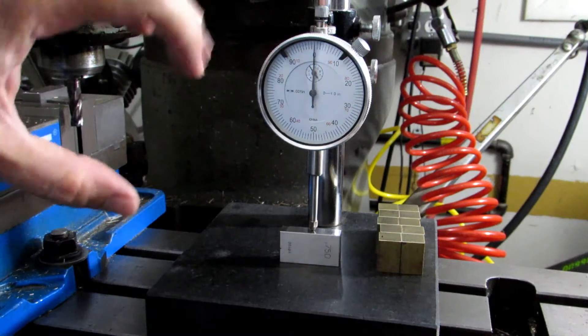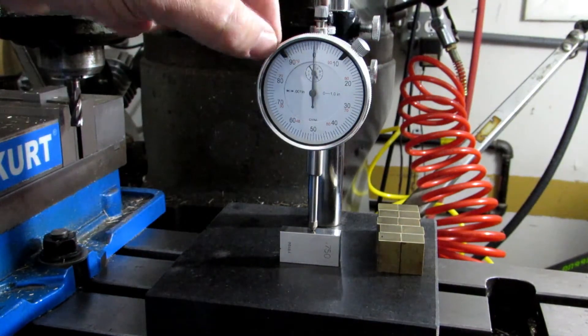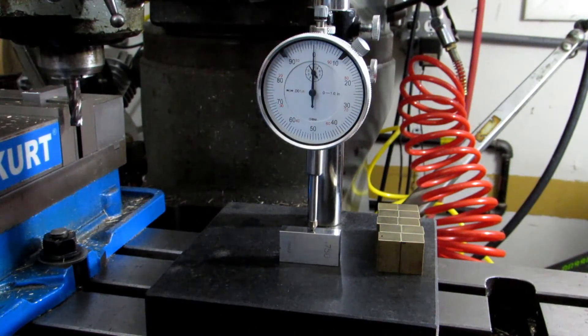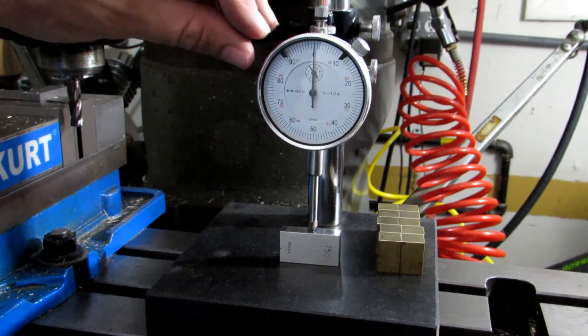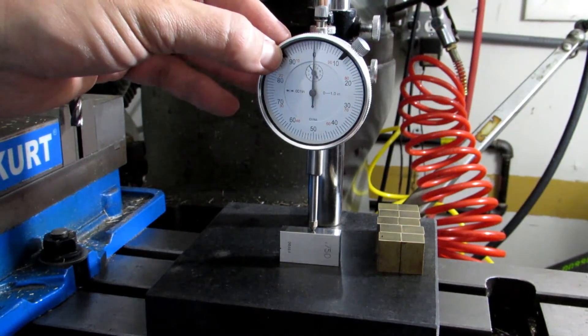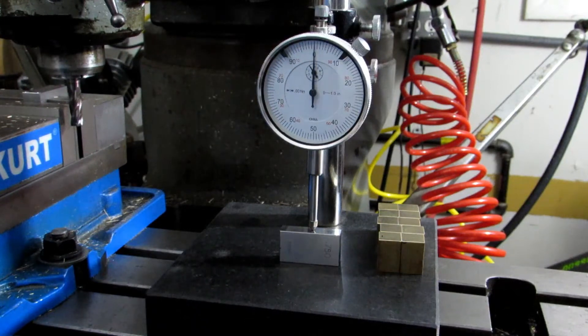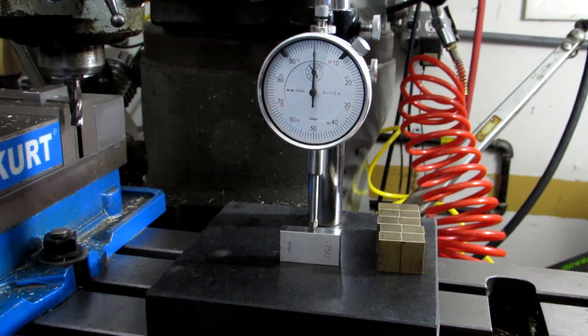One thing you may not know about dial indicators is they have these clips, and sometimes they go along the outside of the bezel. A lot of people think they're annoying, but they do have a purpose - they show what your tolerance would be on something like this. In this case, let's say I had plus or minus ten thousandths. You can have your clips shown at ten thousandths above or below your zero, then it's very easy to see if your needle is outside of your tolerances.